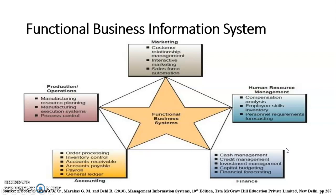Looking at functional business information systems, in any business there are different functions classified into marketing, human resource, finance, accounting, and production. Information systems are classified on different functions to provide information for their respective functional areas. This is called a functional business information system, and there are different information systems for each business function.